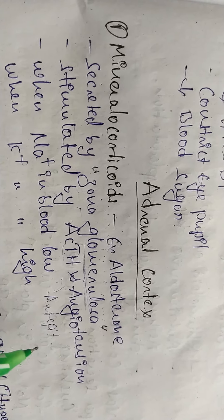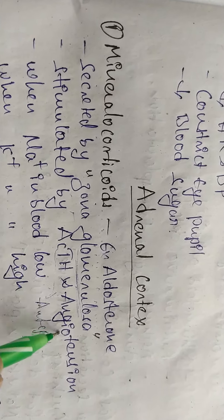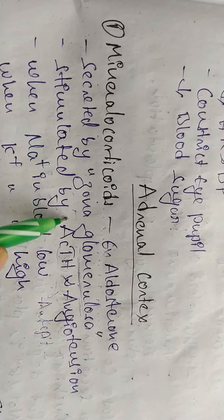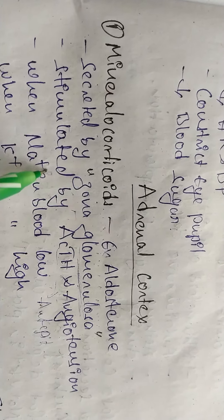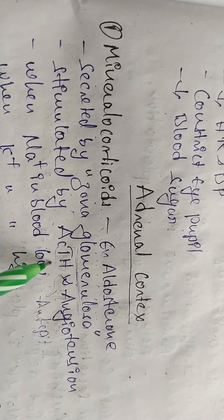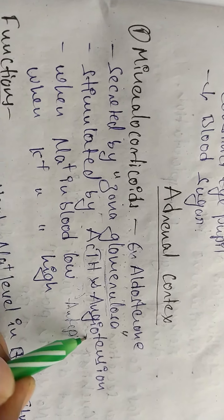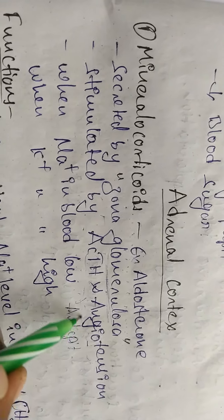ACTH is released from the anterior region of the pituitary gland. Mineralocorticoid secretion is also stimulated by angiotensin enzyme.